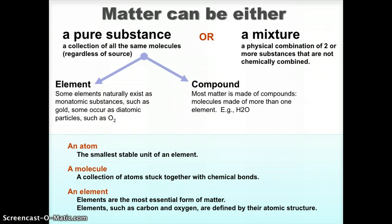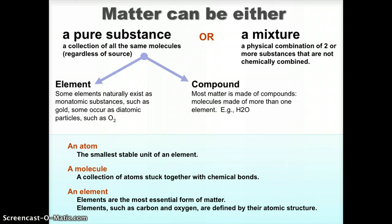Matter can be characterized in different ways. Most substances are compounds and occur in a mixture. For example, salt and water are both compounds. Chemical reactions change the form that matter is made of. This occurs by changing the bonds between the atoms. Some important chemical reactions occur in the atmosphere.